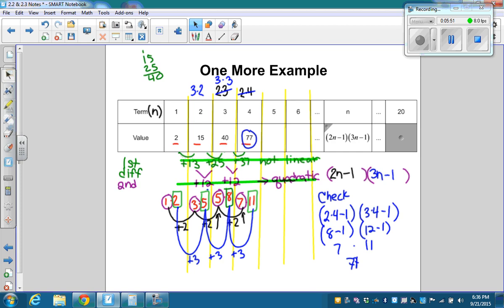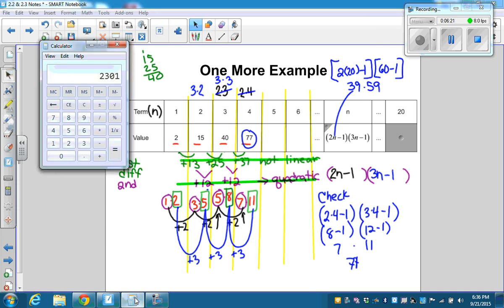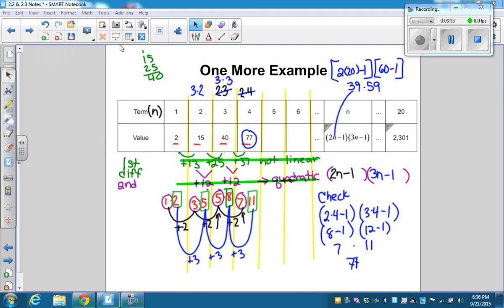And then to figure out the 20th term, you would just plug in 20 to this. So 2 times 20 minus 1, times 60 minus 1. That's how you do the problem.